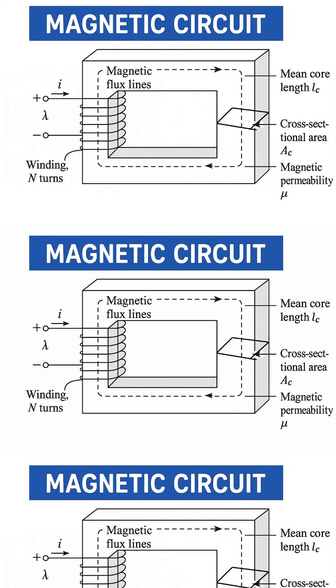This is called a winding. When electric current flows through this winding, shown as I, it creates a magnetic field. This field produces magnetic flux, which travels around the closed path of the core.